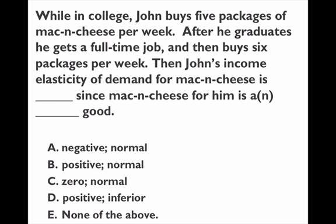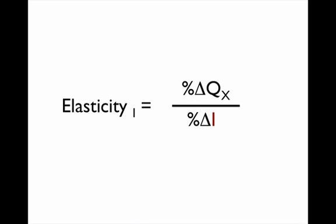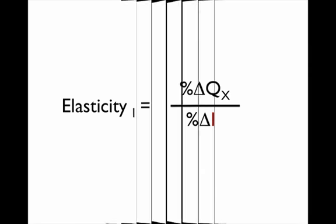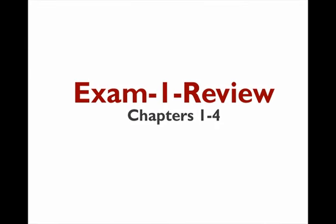Income elasticity works the same way: it measures how demand responds to a change in income. For normal goods, income up means you consume more; for inferior goods like public transportation or ramen noodles, income up means you consume less. In this example, someone buys five packages of mac and cheese in college and six after getting out, so it's a normal good with positive income elasticity. The formula is the same: percentage change in quantity divided by percentage change in income.